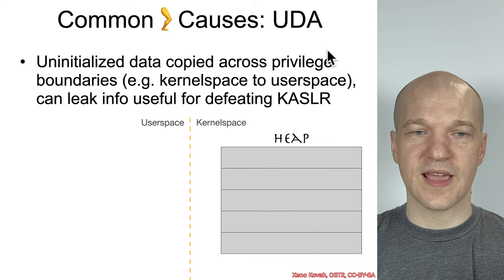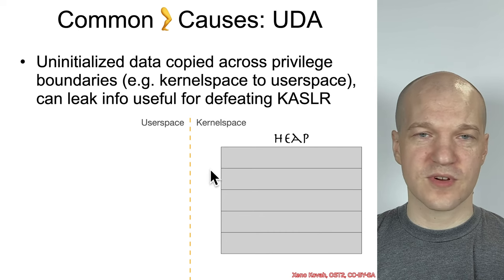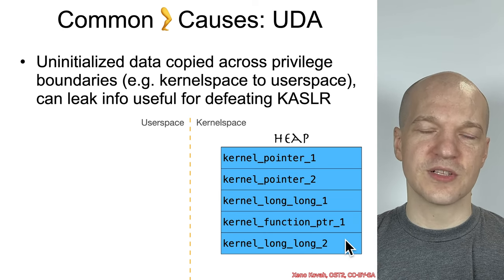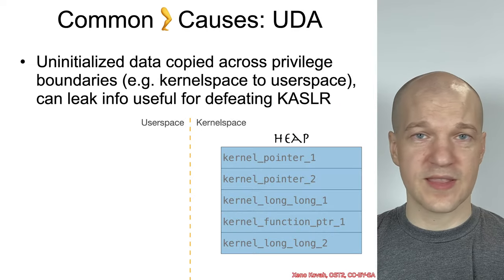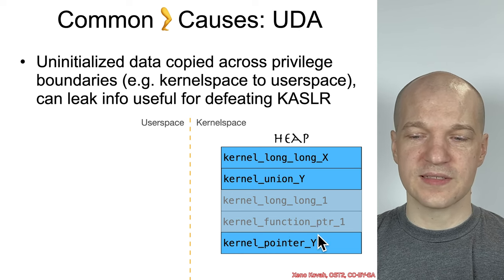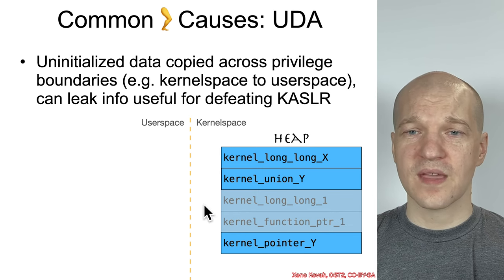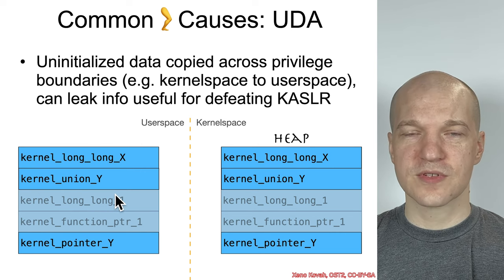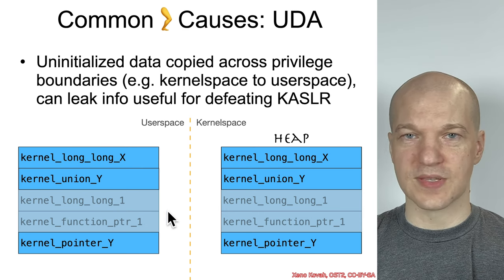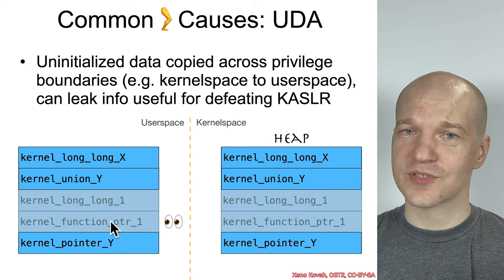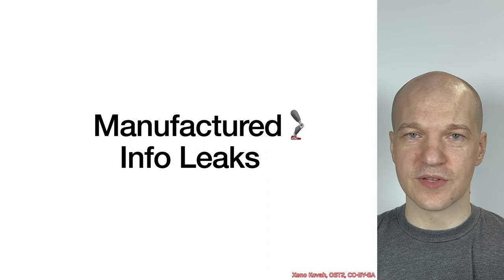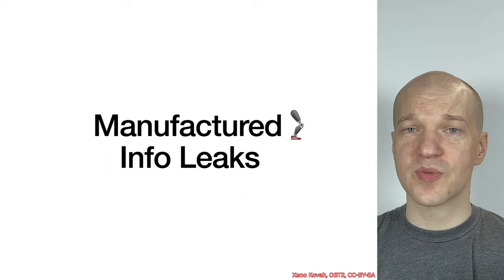Then there are OODA — uninitialized data access vulnerabilities. When you have copies across these boundaries, if some data was initialized on the heap and then freed, and then there was a partial initialization, there would be leftover data in between the fields of the struct. If this data is then copied from kernel space to user space, that uninitialized area would be readable in user space and subsequently disclose information. Things like function pointers could be useful for derandomization.